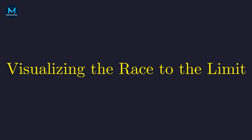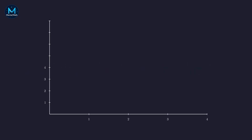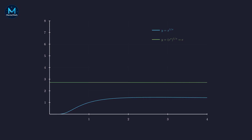We have three different functions, all of the form infinity to the zero, yet they approach three completely different values. Plotting them on a coordinate plane: y = x^(1/x) in blue climbs, peaks, then gradually settles down approaching one. Our second function simplified to y = e — a horizontal line in green. Finally, our third function simplified to y = e^x — a red curve that explodes to infinity. The graph makes it undeniable: three expressions of the form infinity to the zero yielding three completely different results — one, e, and infinity.